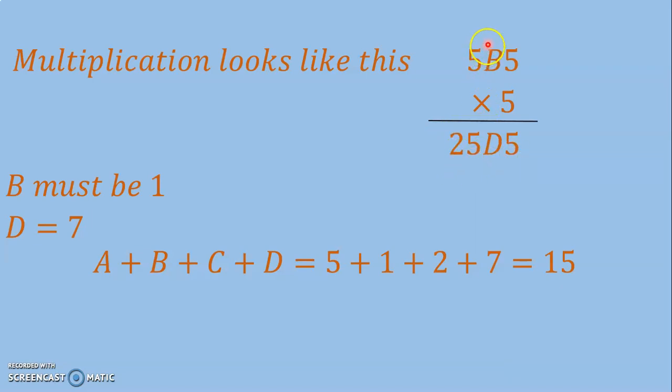B must be 1. If B were 2, then this value would be changed. If B is 1, then D is 7.